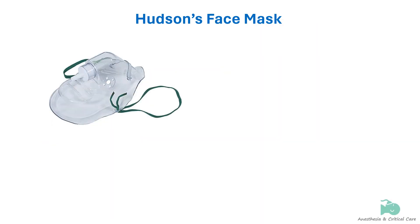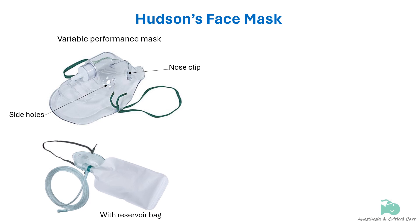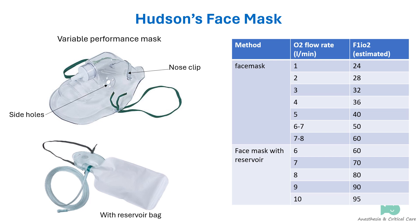Hudson's mask is made of clear transparent plastic with air entrainment holes on the sides. It is a variable performance mask, meaning the concentration of oxygen delivered is flow dependent. It is designed for excellent fit on a wide variety of face sizes. Its adjustable nose clip ensures a comfortable fit, and the transparent build allows visualization for patient assessment. It can also be attached to a reservoir bag to enhance delivery of higher oxygen concentration. This mask is further categorized into simple, partial, and non-rebreather mask.